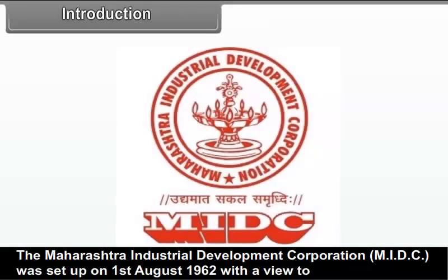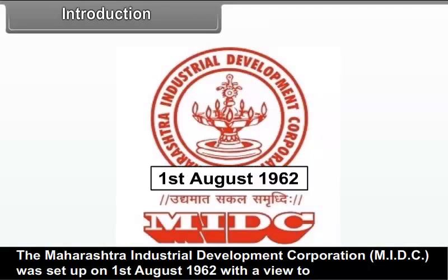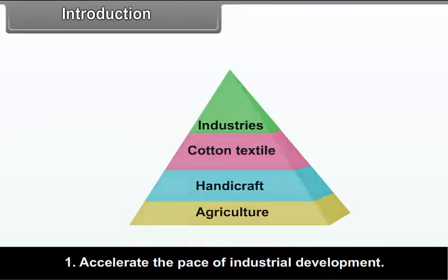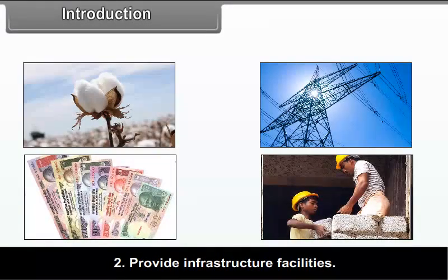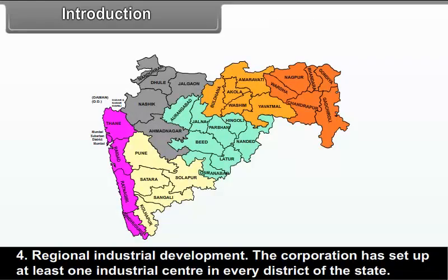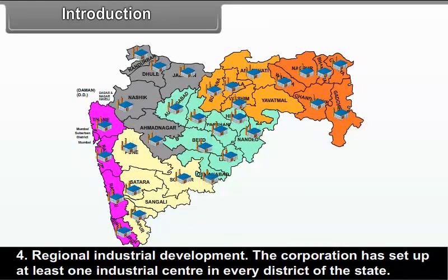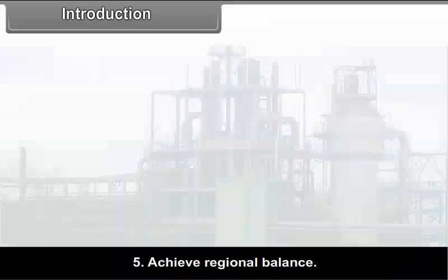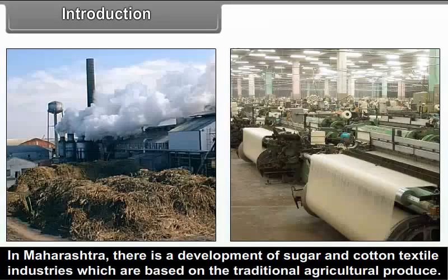The Maharashtra Industrial Development Corporation was set up on 1st August 1962 with a view to accelerate the pace of industrial development, provide infrastructural facilities, promotion of industries in underdeveloped regions and regional industrial development. The corporation has set up at least one industrial centre in every district of the state to achieve regional balance.